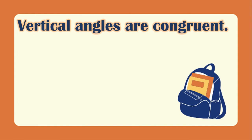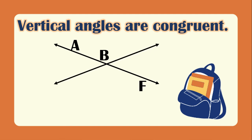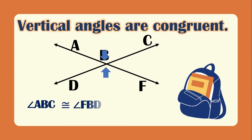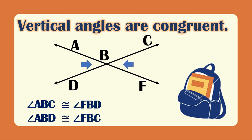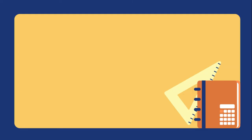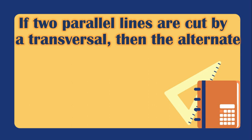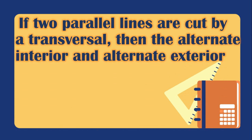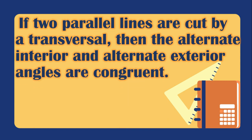The next theorem: vertical angles are congruent. When two lines intersect, angle ABC is congruent to angle FBD and angle ABD is congruent to angle FDC because they are vertical angles. Another theorem: if two parallel lines are cut by a transversal, the alternate interior and alternate exterior angles are congruent.